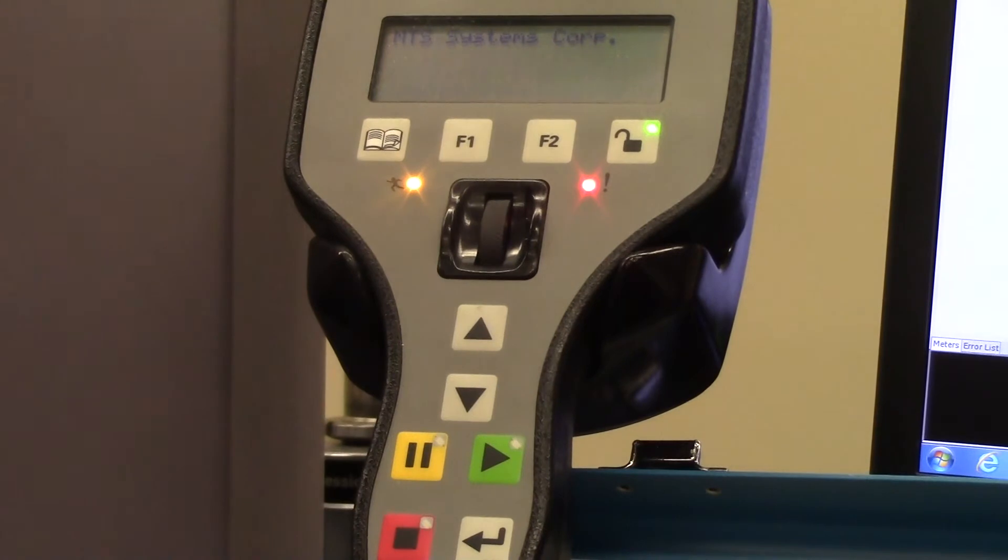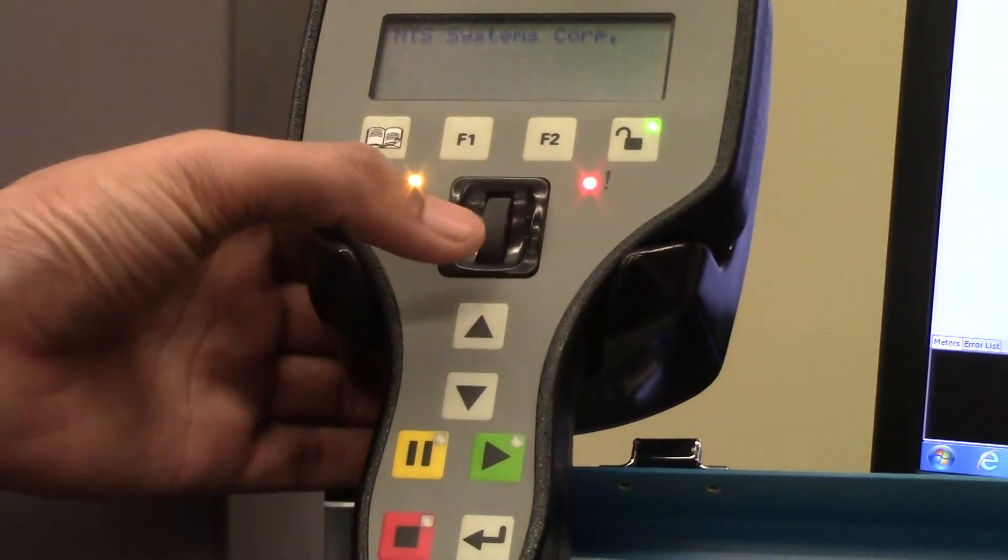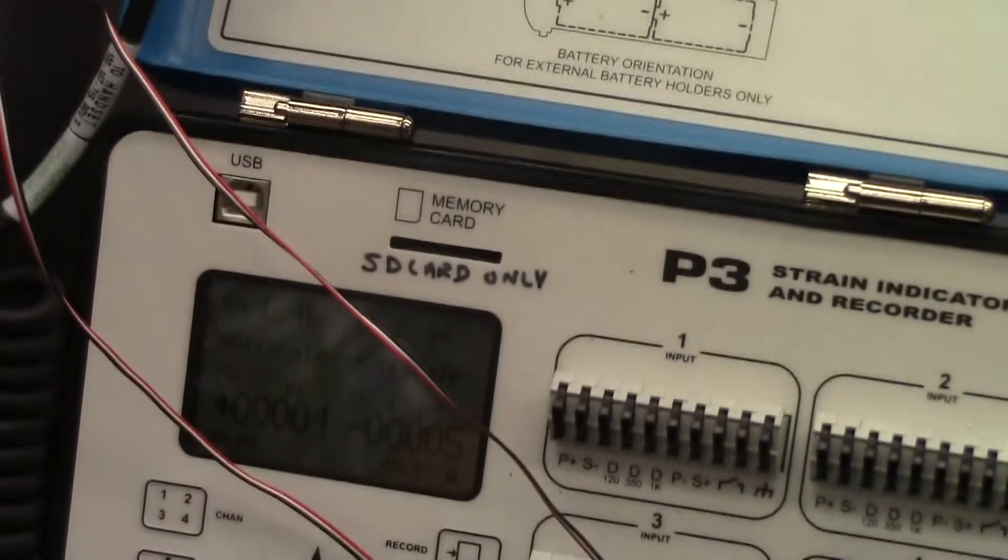Okay, so now what we're going to do is we're going to use the hand paddle to change the load to 500 pounds. So every 500 pounds, we're going to take a reading.